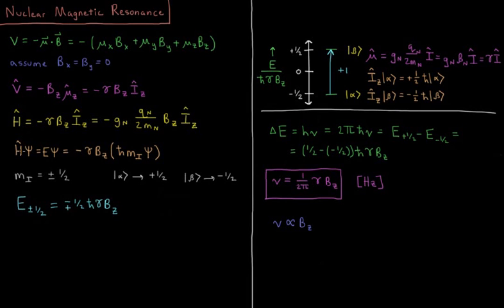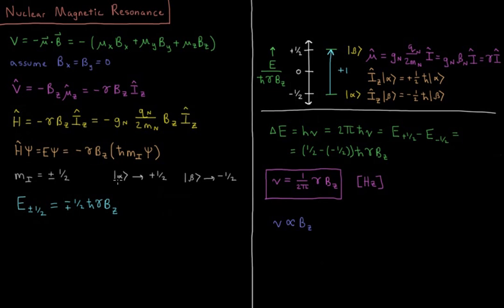For our wave function, we have H·ψ = E·ψ, the standard Schrödinger equation, so that's going to equal negative gamma·Bz. Our wave functions for our nuclei are either going to be spin up (one half, alpha) or spin down (minus one half, beta). When we operate on our spin function with the z component of the angular momentum operator, we get h-bar times the value m sub i, which is either plus or minus one half, depending on whether we have spin up alpha or spin down beta.